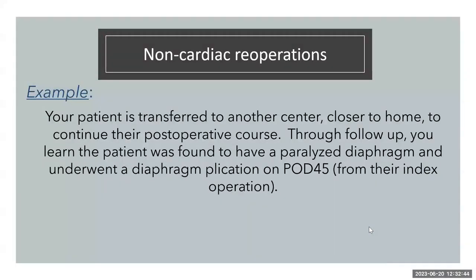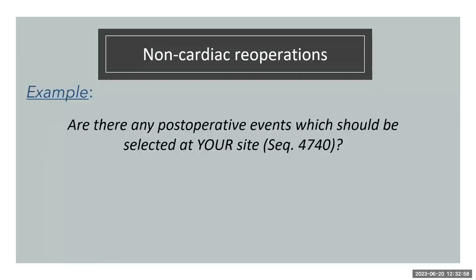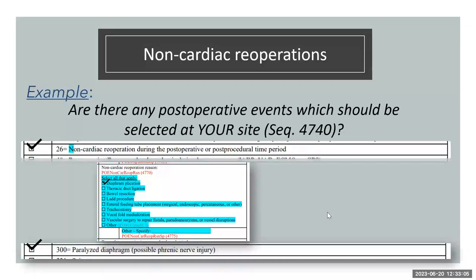Separate example: A patient is transferred to another center closer to home. Through follow-up, you learn the patient was found to have a paralyzed diaphragm and underwent diaphragm plication on post-op day 45. You should collect at your site: code 26 non-cardiac re-op with diaphragm plication as the child field, and also select paralyzed diaphragm—both are major complications.